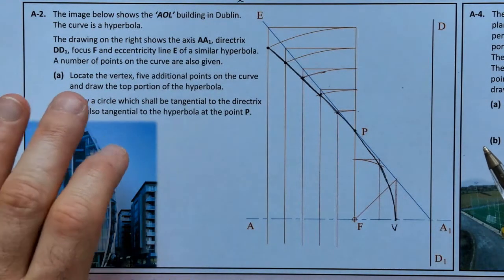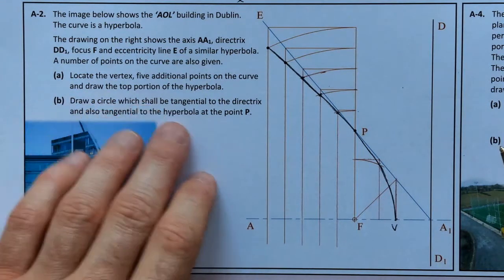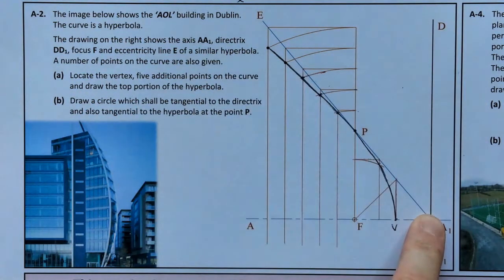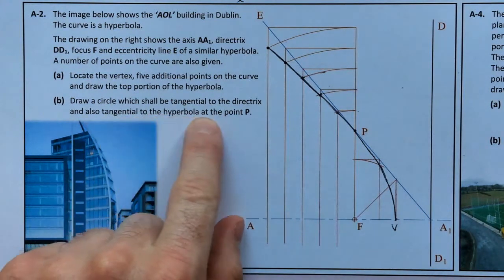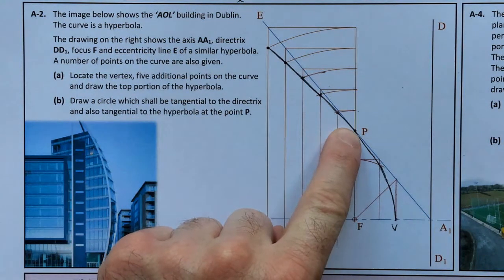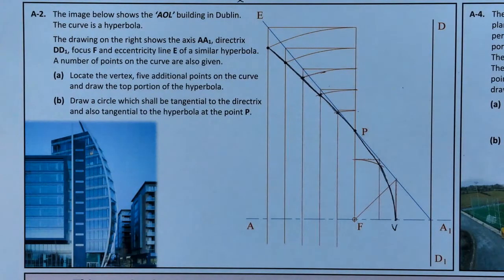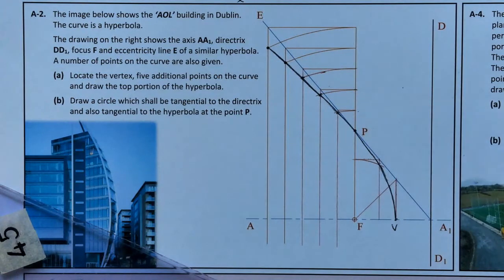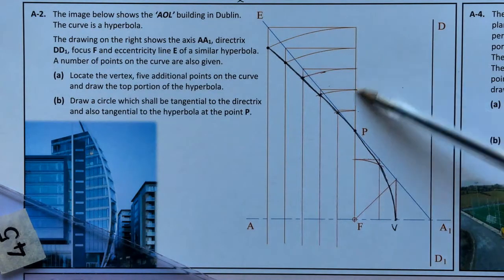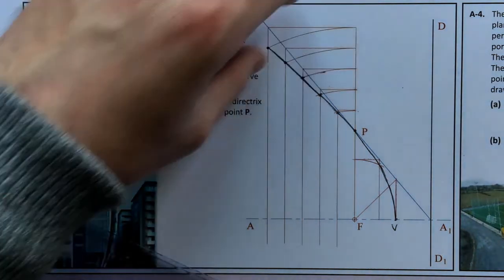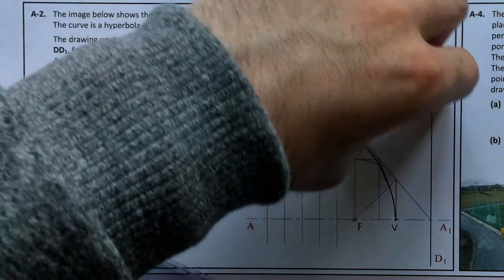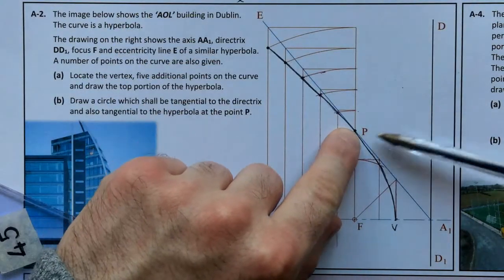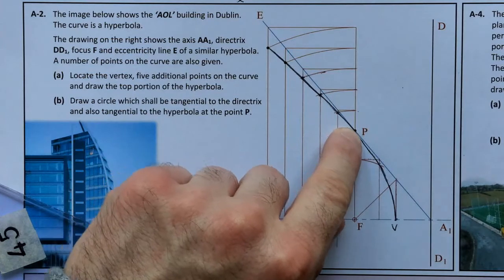Part B: draw a circle which shall be tangential to the directrix and also tangential to the hyperbola at point P. Essentially I need a circle — no radius is given — that squeezes in here. It's like dropping a ball that slots into the gap, only as big as it touching point P here, and the directrix.